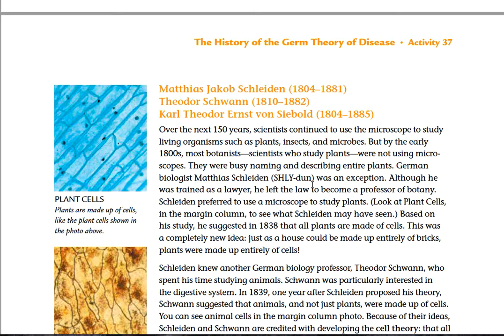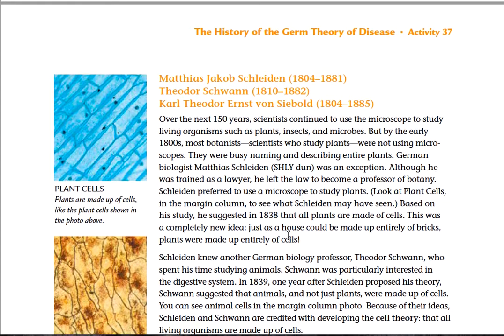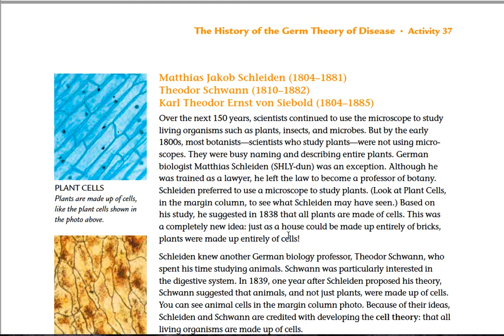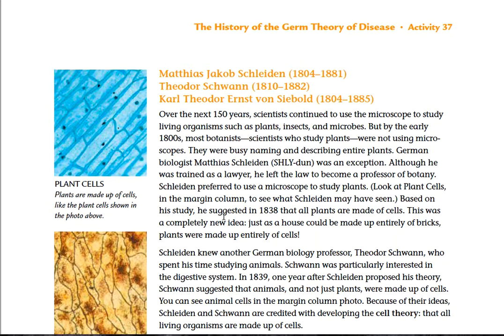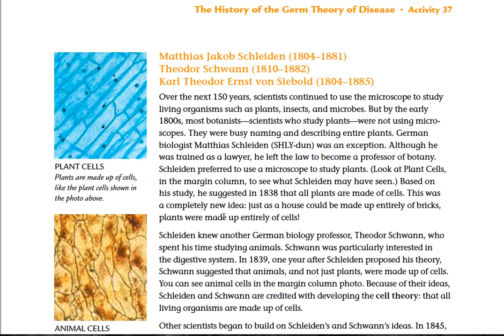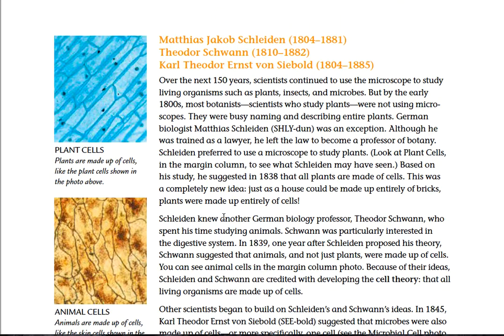German biologist Matthias Schleiden was an exception. Although he trained as a lawyer, he left the law to become a professor of botany. Schleiden preferred to use a microscope to study plants. Based on his study, he suggested in 1838 that all plants are made of cells. This was a completely new idea — just as a house could be made up entirely of bricks, plants were made up entirely of cells.